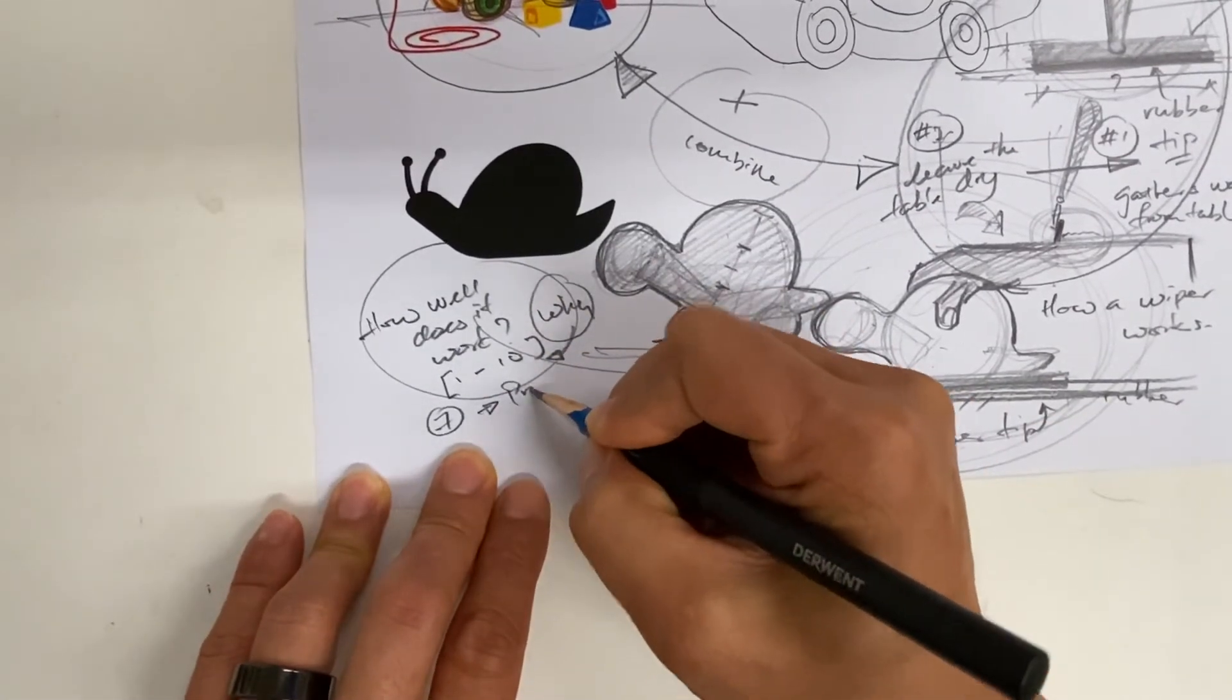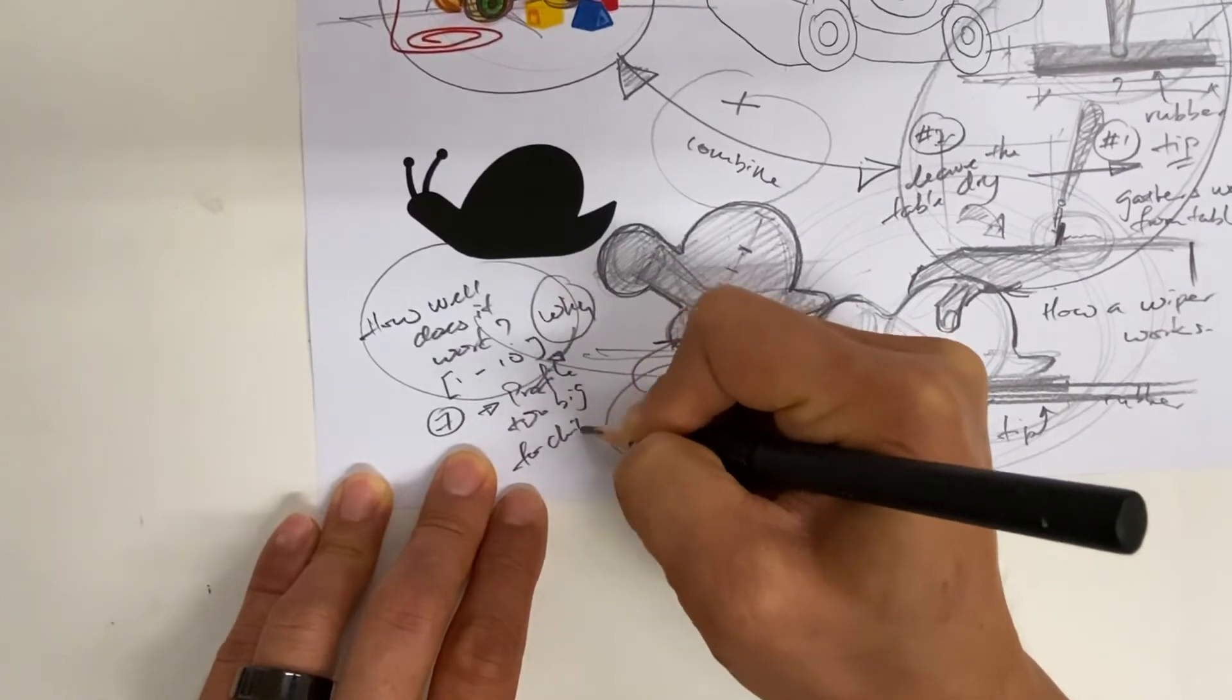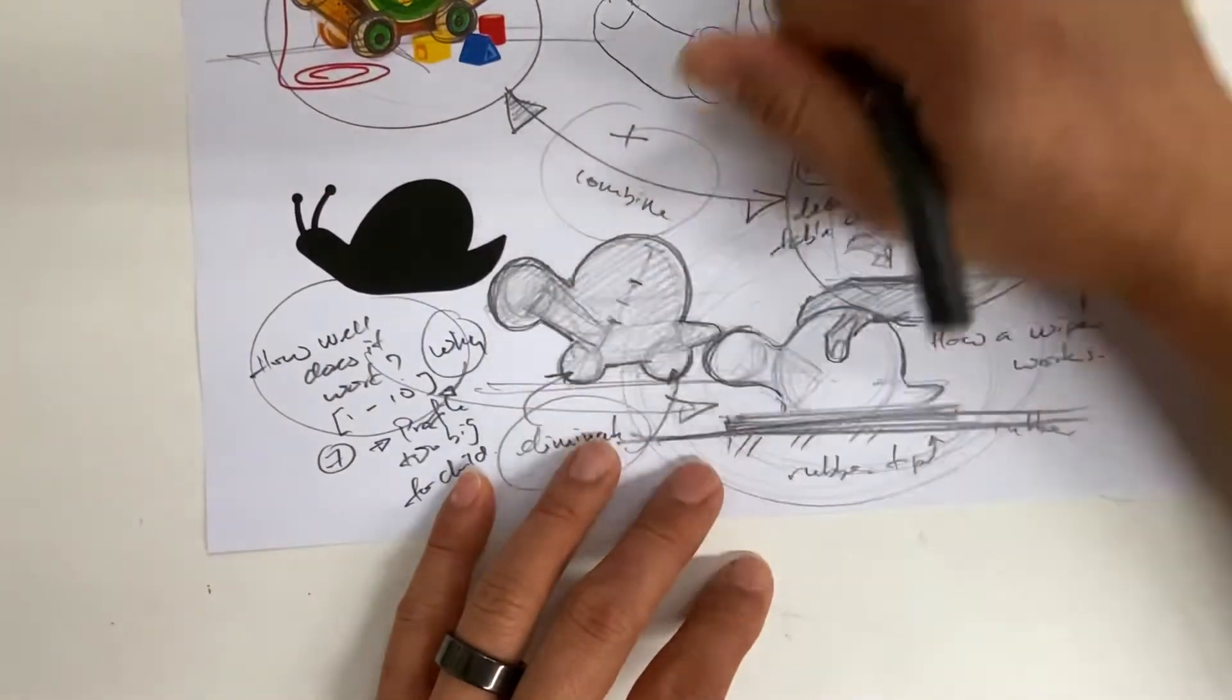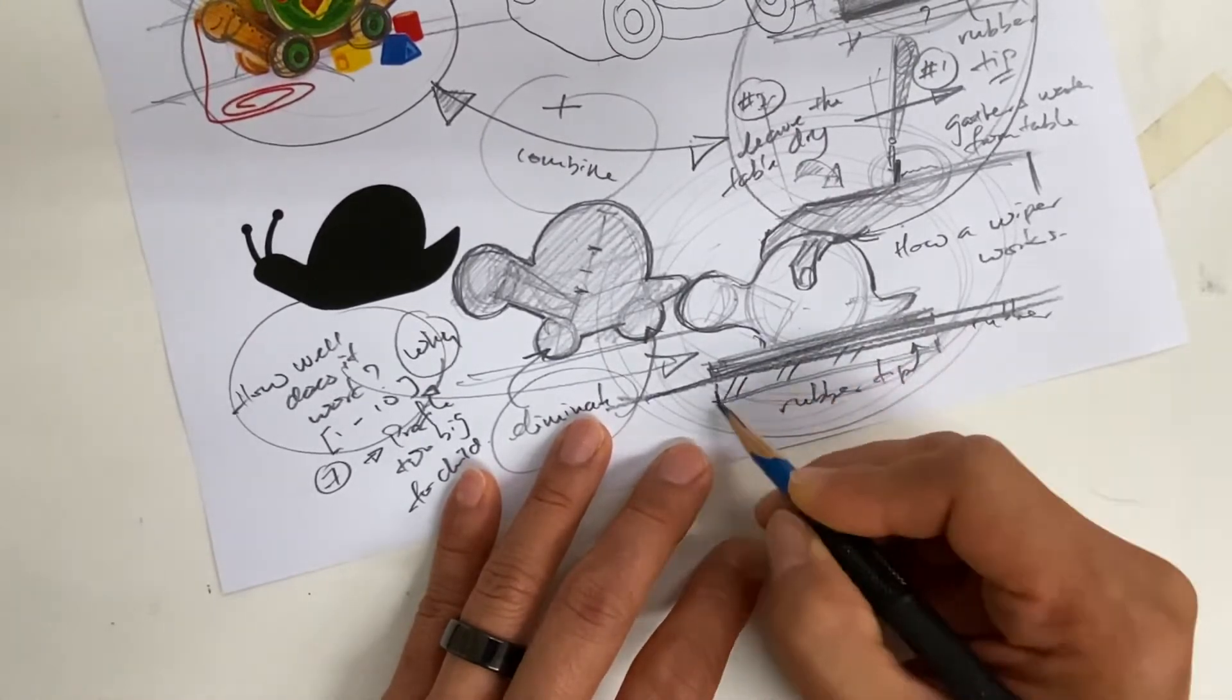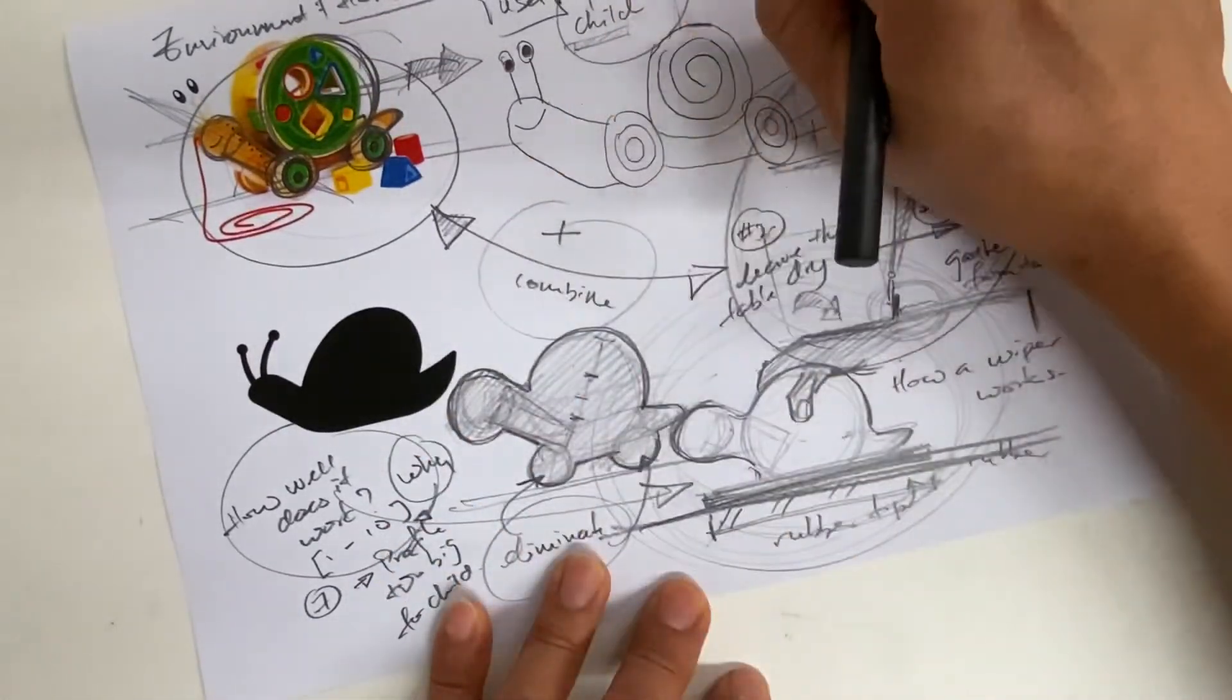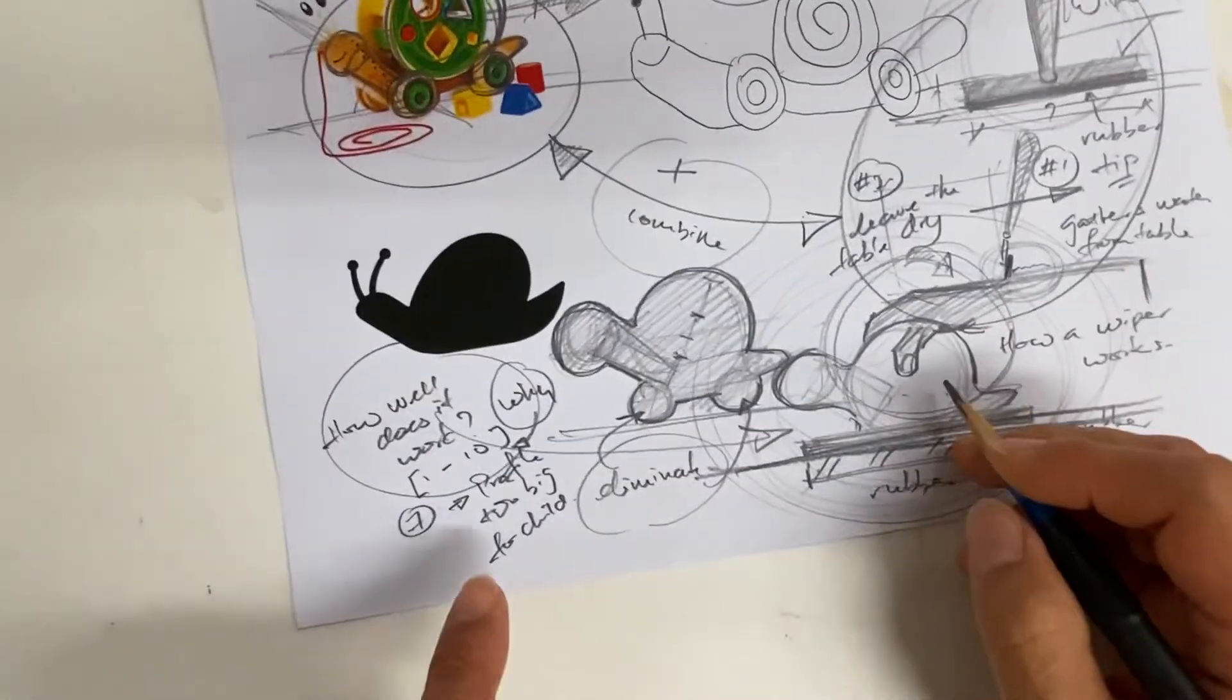I think the profile is still a little bit too big for the child. If this will be smaller, it will be easier to hold. It will be easier to manage. But I want to keep the length. I want to keep the length of the rubber to be the same so that it can cover a little bit more area when the child uses it and dries the table. But the holding part must be comfortable. That is ergonomics.